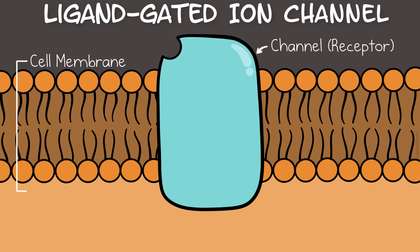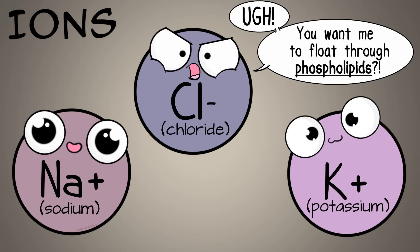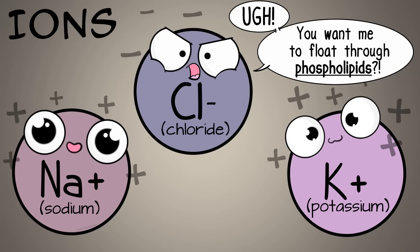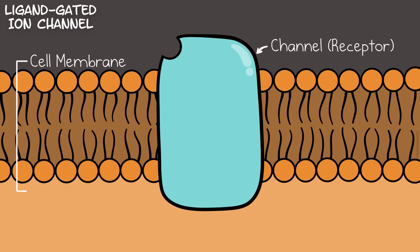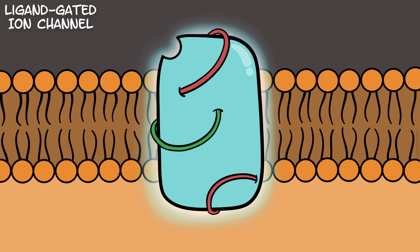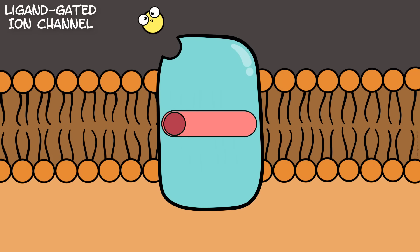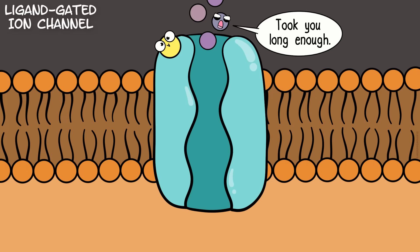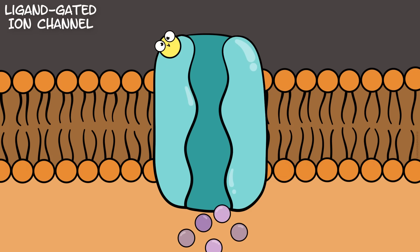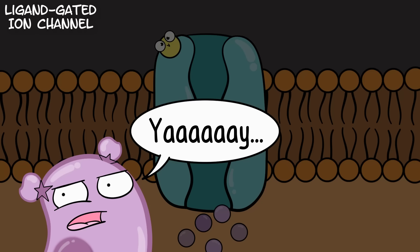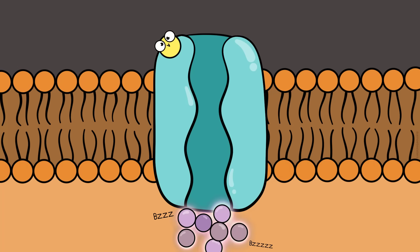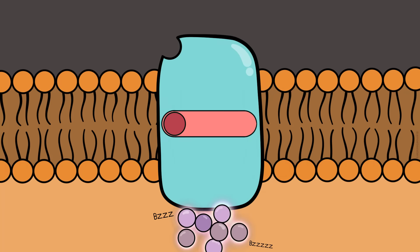Let's look at a ligand-gated ion channel as an example of a cell surface receptor type. Ions normally don't go unassisted through the cell membrane since they are charged, but a ligand-gated ion channel gives them a way through — through a channel, but controlled. The channel is closed until a signal molecule, a ligand, binds the receptor, which is the channel protein. The channel protein then responds by opening, and the ions go through. Once ions get through, the concentration of ions increases in the cell, which can trigger a cellular response. After reaching a certain concentration and stimulating a cell response, the ligand can leave its binding site and the channel can close.